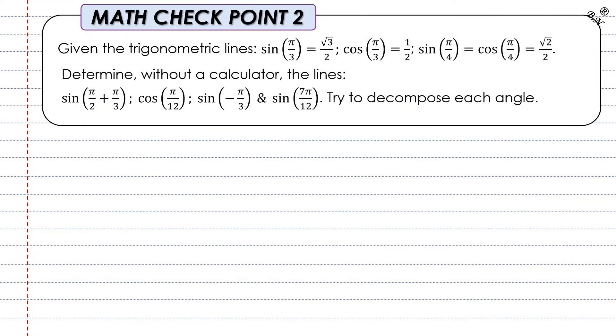The second math checkpoint applies to applications about trigonometric lines. We are given sin and cos of angle π/3, and sin and cos of angle π/4 (which is 45 degrees). You're asked to determine without a calculator—I'm sure you have calculators, but try to apply the trigonometric relations to find: sin(π/2 + π/3), cos(π/12), sin(-π/3), and sin(7π/2). Try to decompose the given angles. Again, you'll find the solution in a separate video.